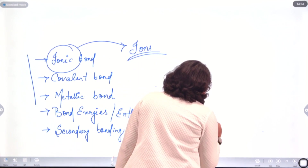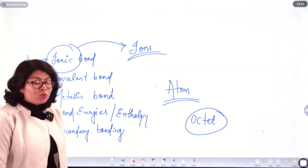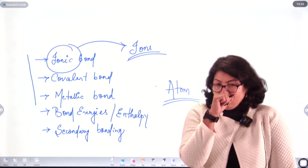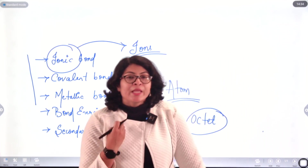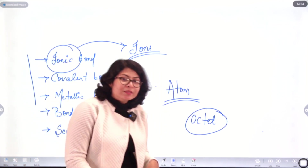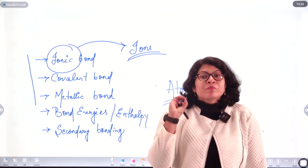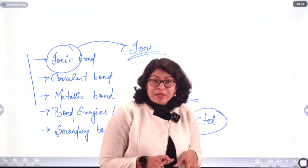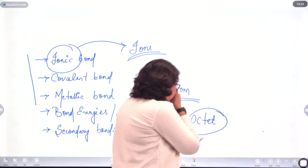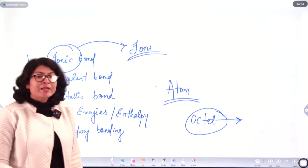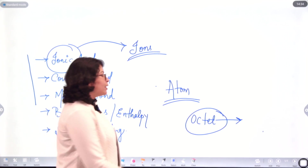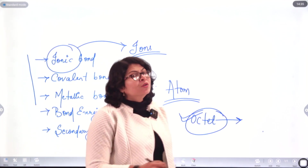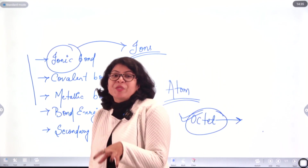There is a rule called the Octet Rule, which is the major driving idea behind bonds — it led to the formation of bonds. The Octet Rule states that any atom, whether it is a metal, non-metal, or anything, tends to have a maximum of eight electrons in its outermost shell. An atom can be considered stable if it has eight electrons in its outermost shell. In order to attain eight electrons, the atom can go to any extent — by any means, the atom will attain eight electrons in its outermost shell.